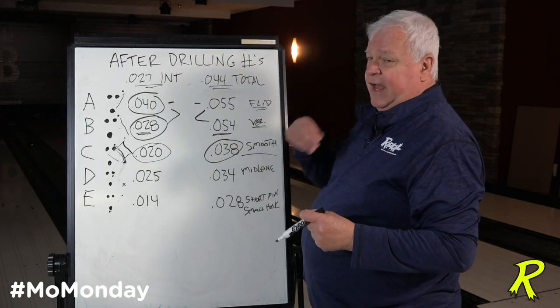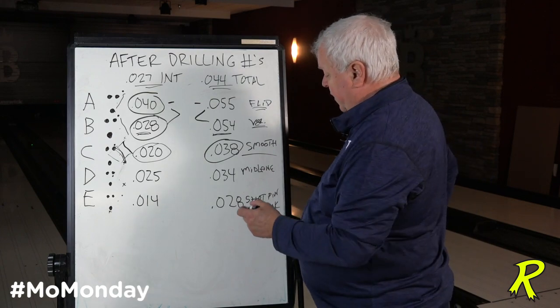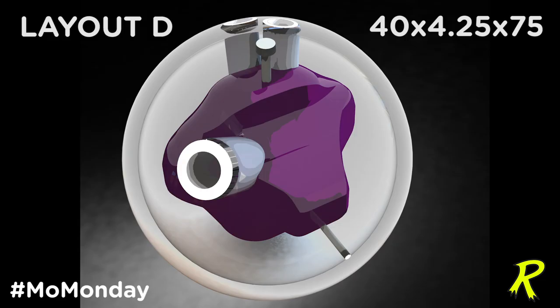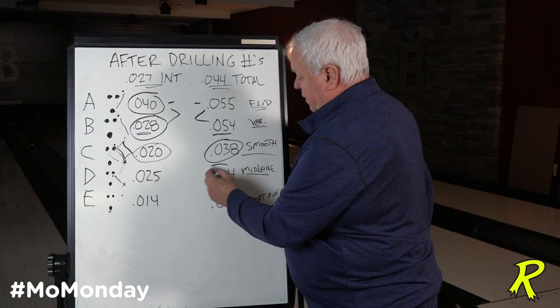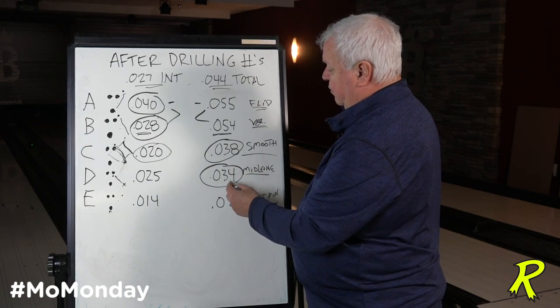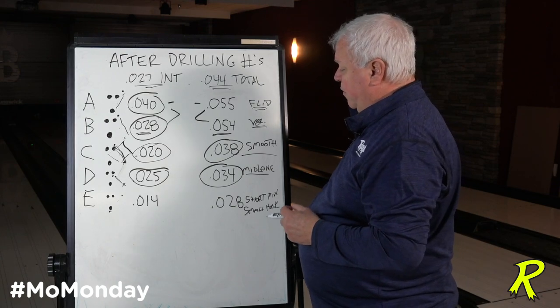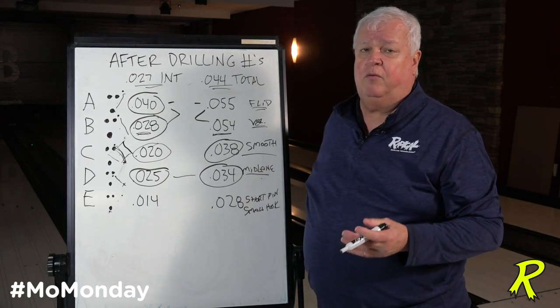Each of the places you put the holes and the angle of the core impacts the ball motion. For more mid-lane read, here's a pin down drilling. That means you drilled on the top of the core, putting the fingers into the top of the body and the thumb right into the belly of the core. It took out a lot of the differential — lowered the total diff down to 034 and got the intermediate diff down to 025. It's a lower combination and the ball reads more mid lane.